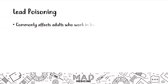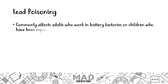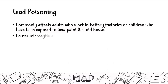Lead poisoning can occur when you are exposed to an excessive amount of lead. This commonly affects adults who work in battery factories, or children who have been exposed to lead in an old house — a lot of times the paint in old houses has increased amounts of lead, and if it starts chipping and a child eats it, they will be exposed to lead poisoning. When lead poisoning occurs, it's going to lead to a microcytic anemia, and the hallmark of microcytic anemia is an MCV that is less than 80.